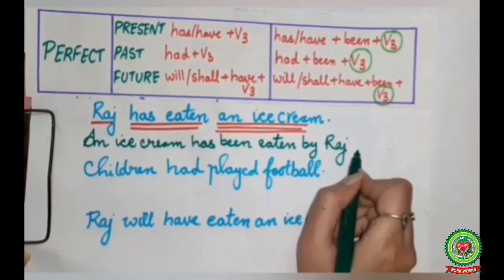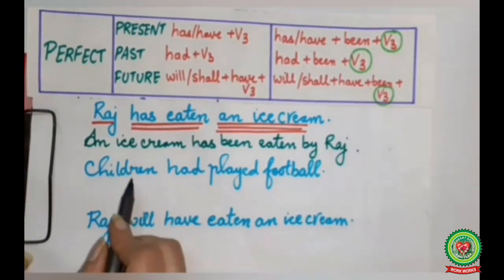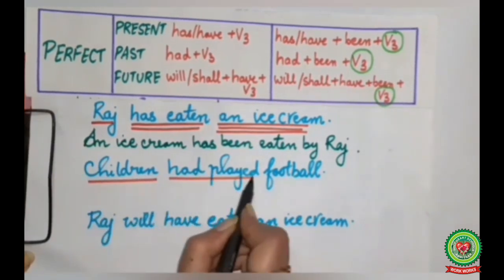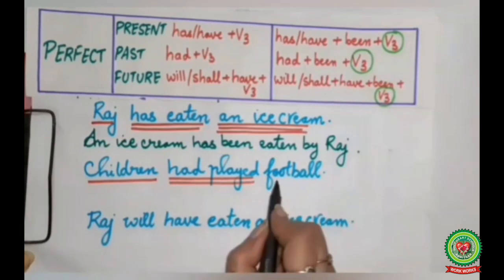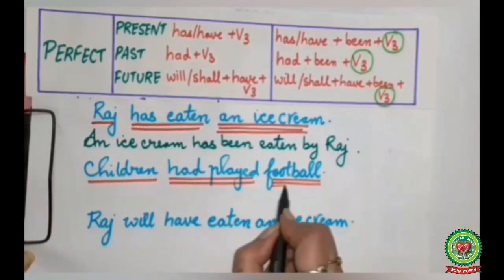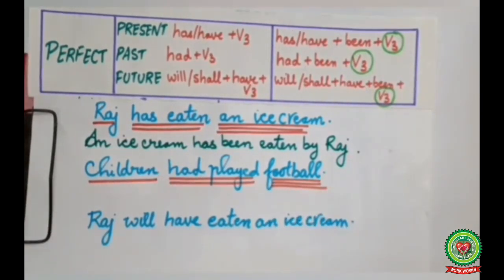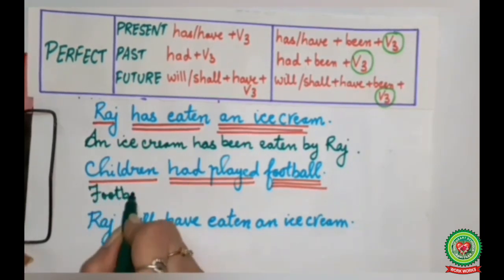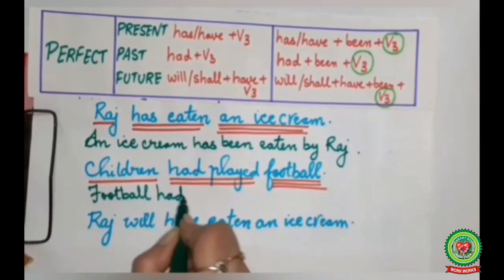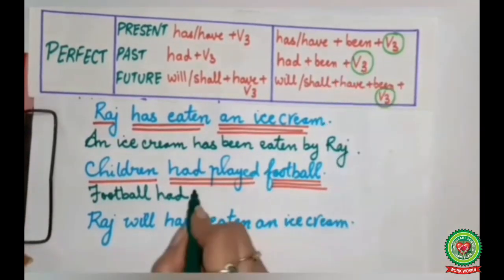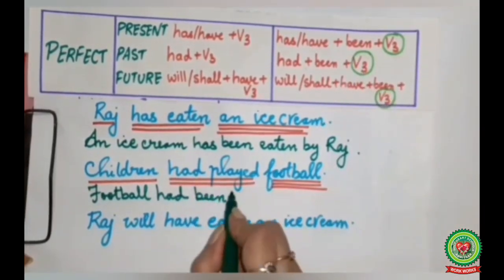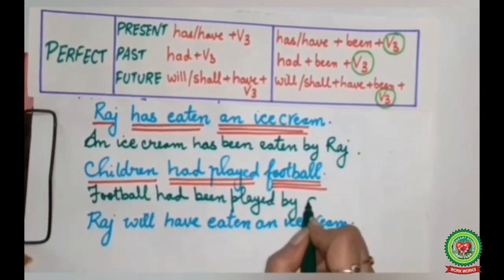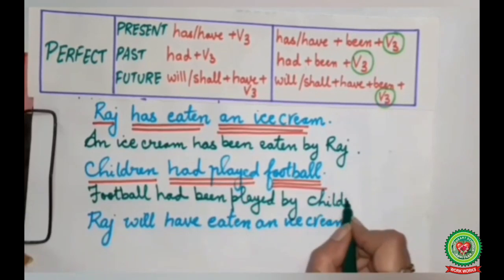In the second sentence: Children had played football. Children is the subject (single underline), had played is the verb (double underline), football is the object (triple underline). The sentence becomes: Football had been played by children.